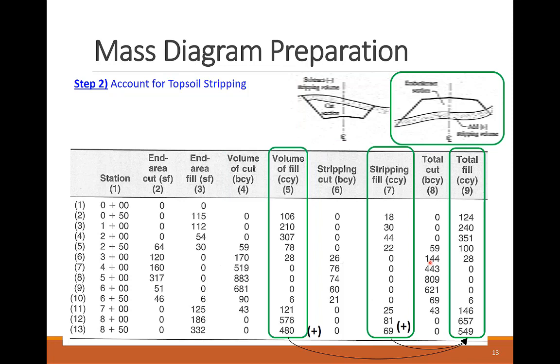On the other hand, the fill volumes are revised in column 9 by adding the stripping at the fill segment to the fill volume listed in column 5. For example, the fill volume of the first segment between stations 1 and 2 is increased from 106 to 124 by adding the stripping fill volume value in column 7.